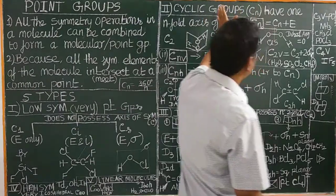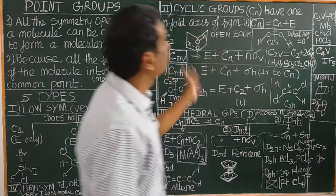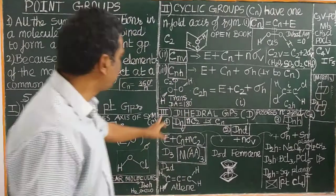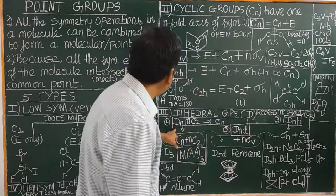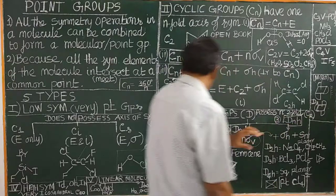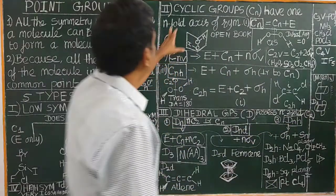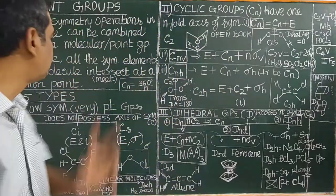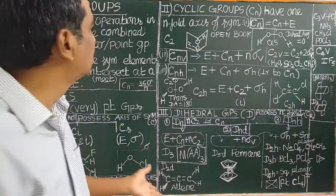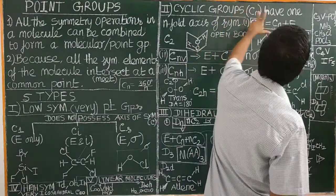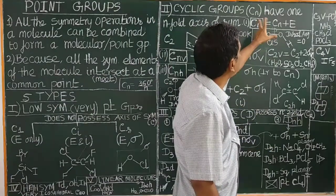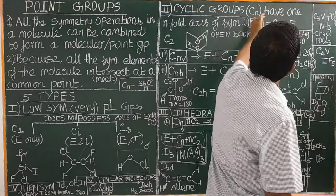Now let us see cyclic point groups — Cn. There are three types of cyclic groups: Cn, CnV, and CnH. Similarly, dihedral groups have Dn, DnD, and DnH. Cyclic point groups have only an n-fold axis of symmetry. Unlike very low symmetry point groups which do not possess any axis of symmetry, cyclic point groups have only one n-fold axis of symmetry — that is Cn. Therefore, in addition to E, it has Cn.